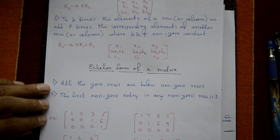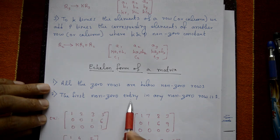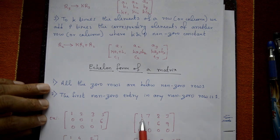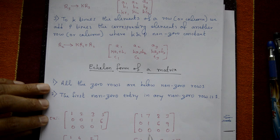Third example: 1 4 2, then 0 1 0, then 0 0 0 — leading one in first row, first column. Fourth example: 1 2 3 followed by all-zero rows. For all four examples, the first entry in the first row first column is one, and the second row's second element is also one where required.